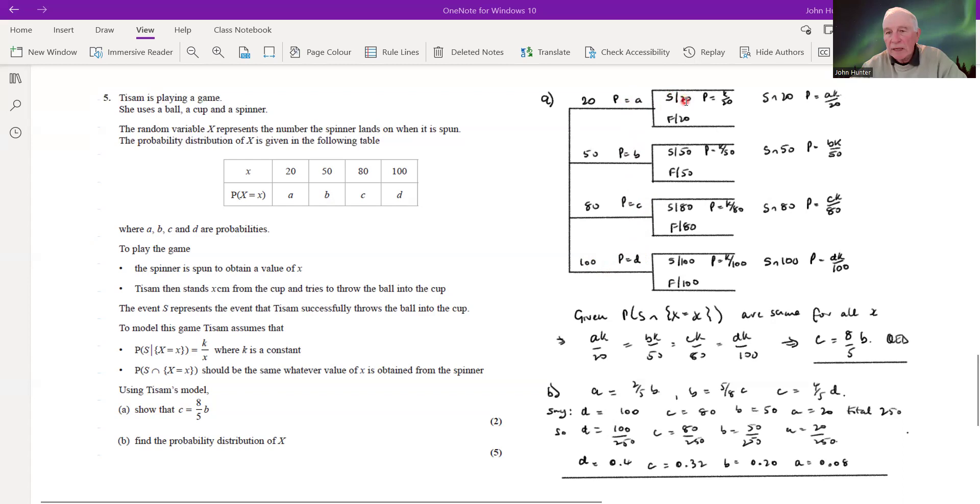Okay, that's what this statement here is saying. And likewise, the probability of success given that we threw a 50 on the spinner is going to be k over 50.